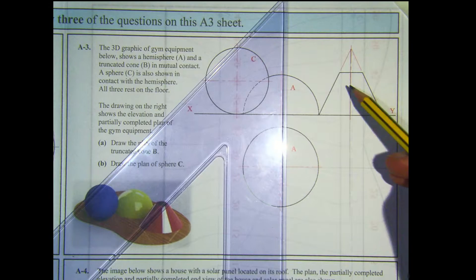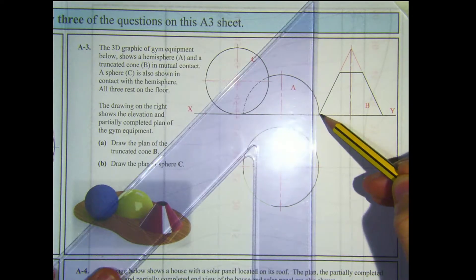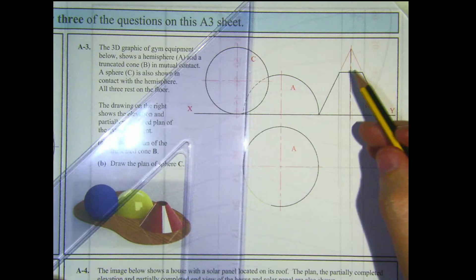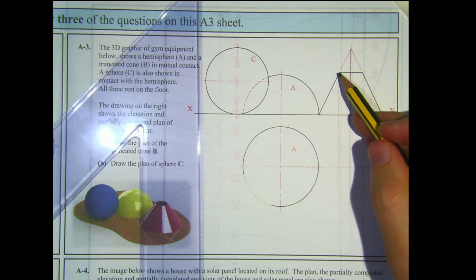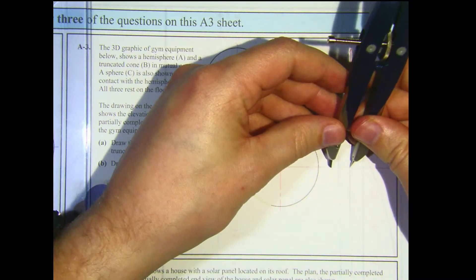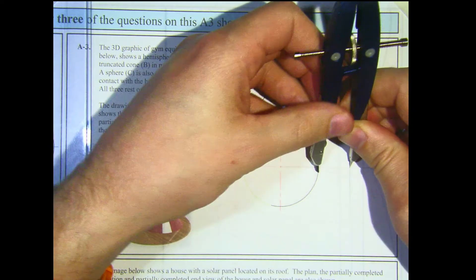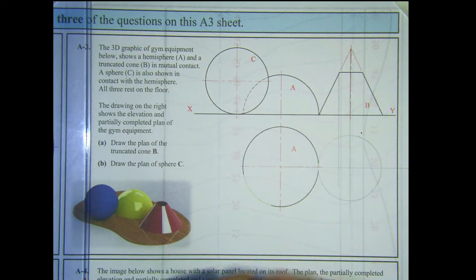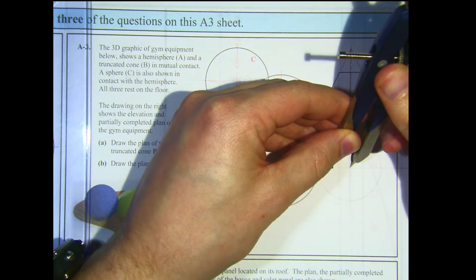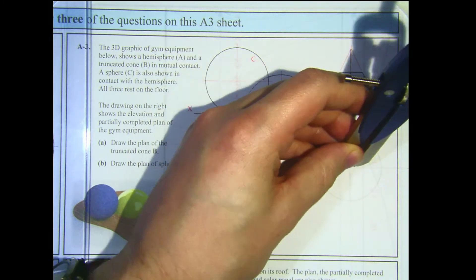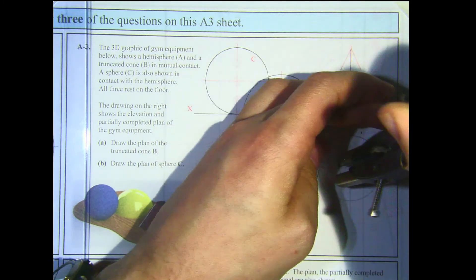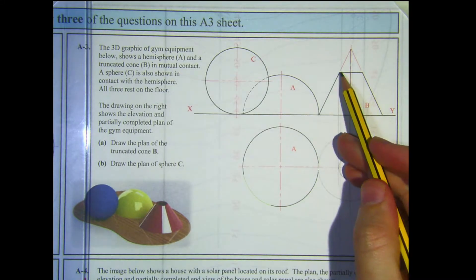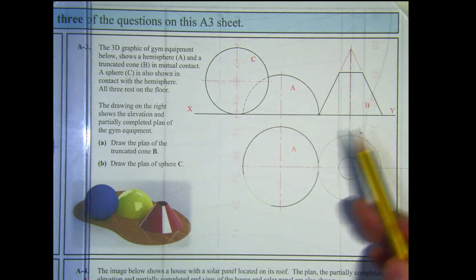The truncated cone will appear as two circles in plan — one for the top and one for the base. The radius for the base we already have from the centre point out to the edge. The radius for the top is the distance from the centre out to the side in the elevation. Using a compass, draw these two circles in. The small circle is the top of the truncated cone and the larger circle is the base. That completes drawing the truncated cone B in plan.